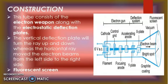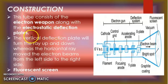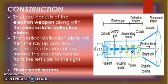Moving forward to construction, we have three main parts: electron gun, deflection system, and fluorescent screen. The long tube consists of the electron gun along with electrostatic deflection plates. The electron gun gives us electrons. The deflection plates keep our electron beam focused. Then there is a fluorescent screen where the electron produces our image.